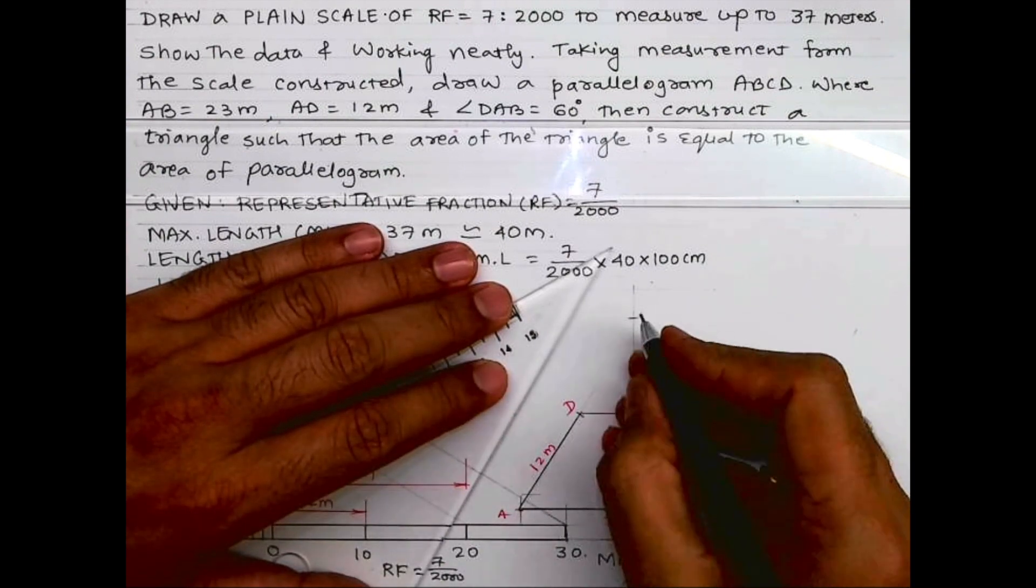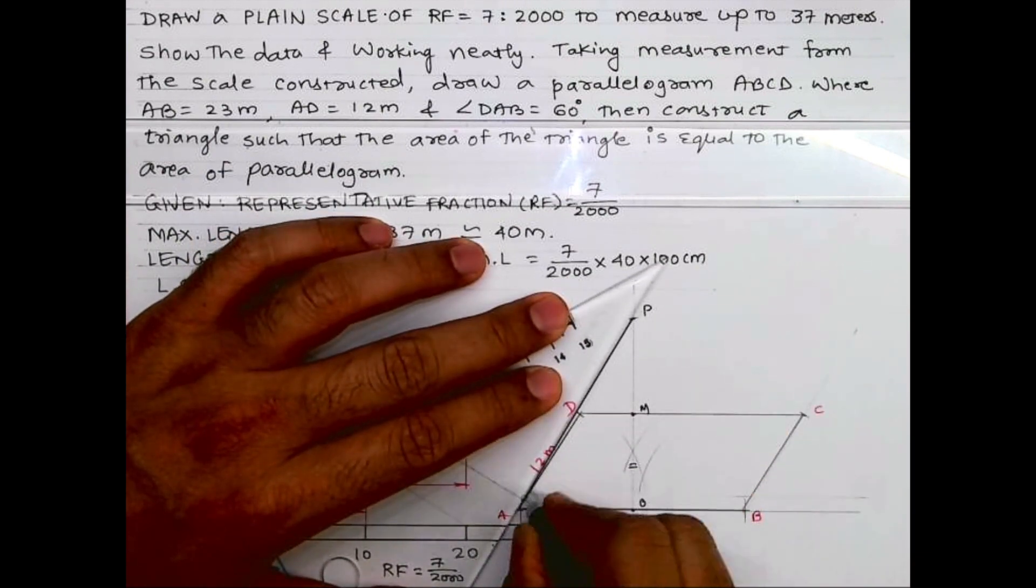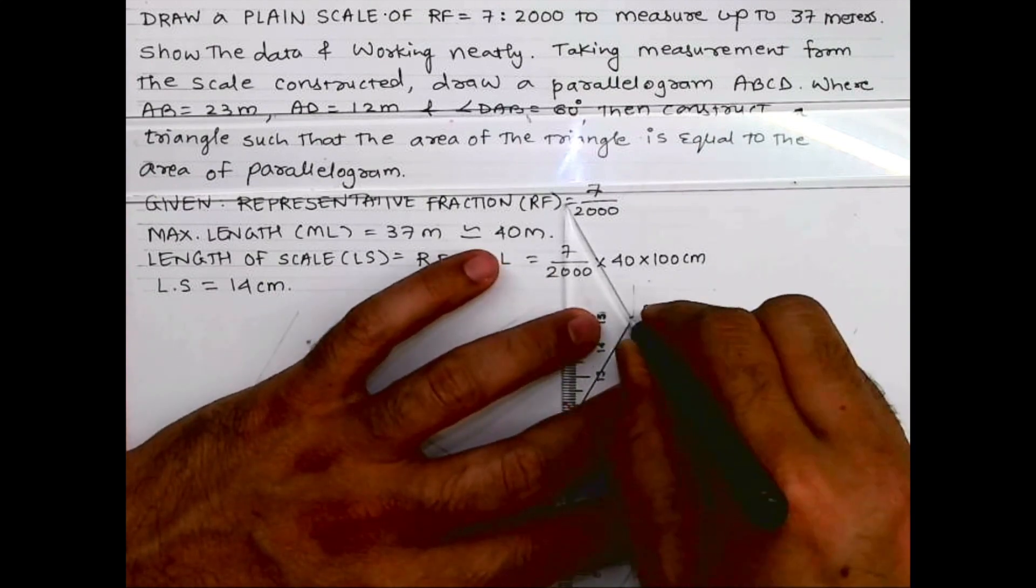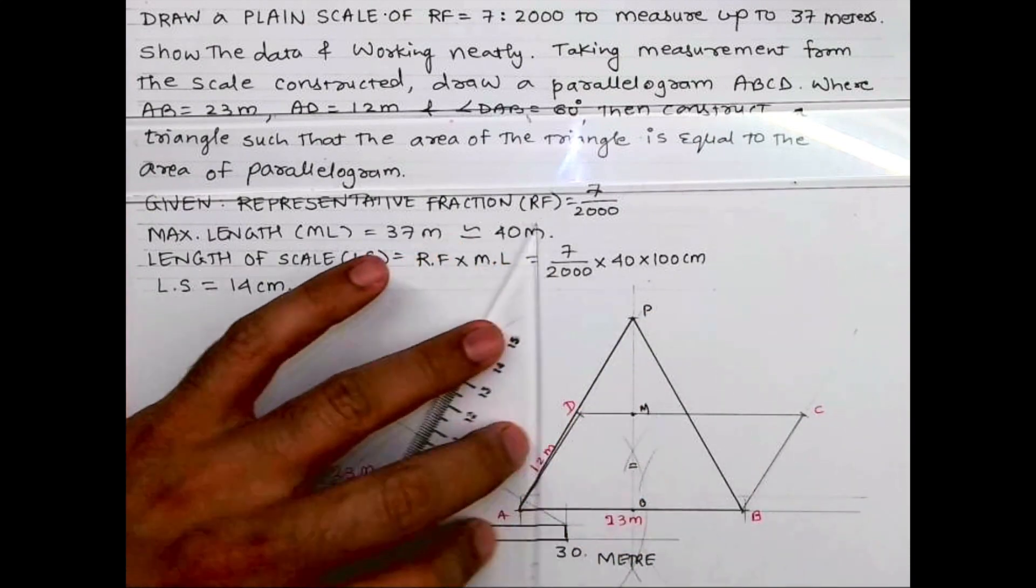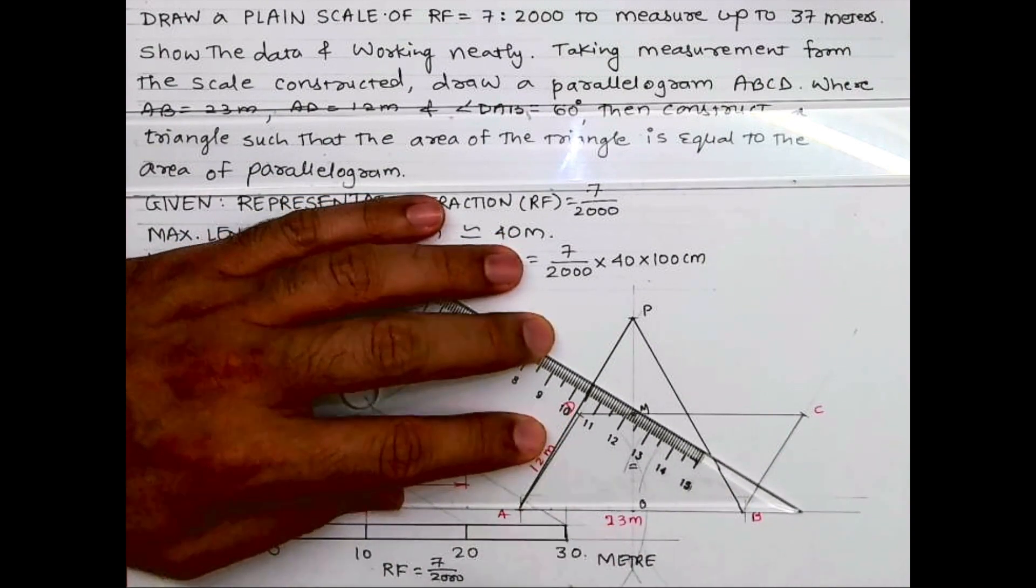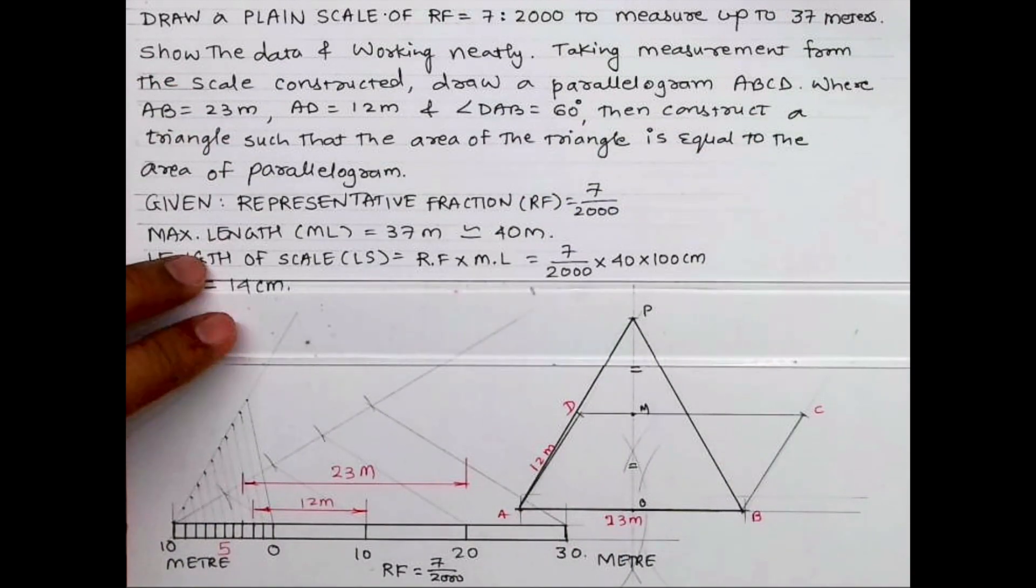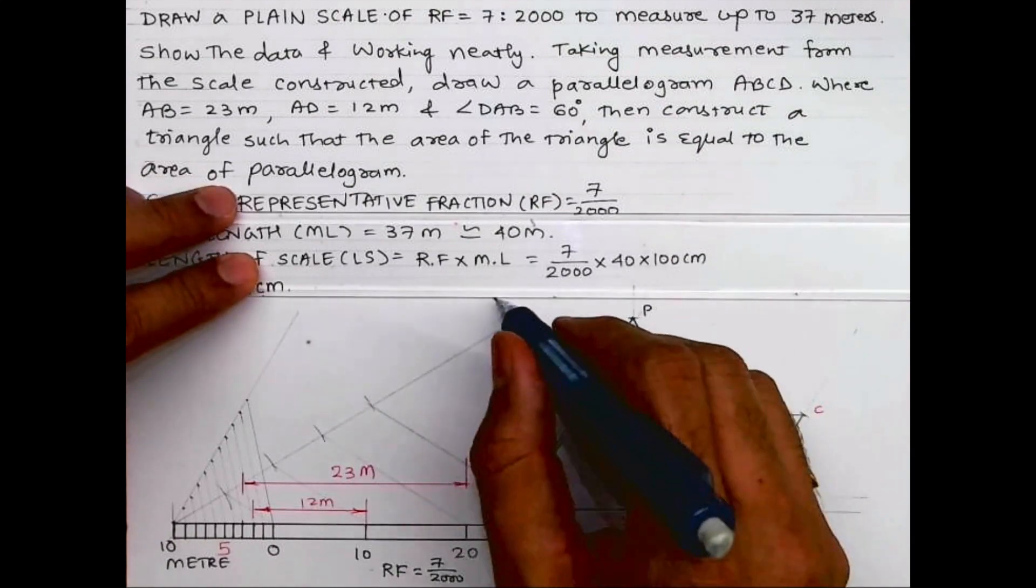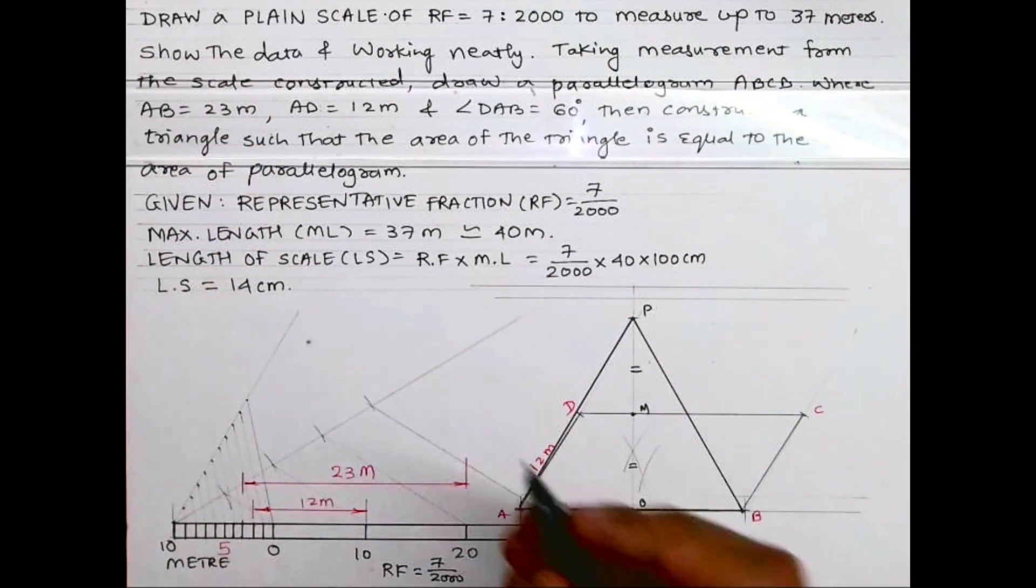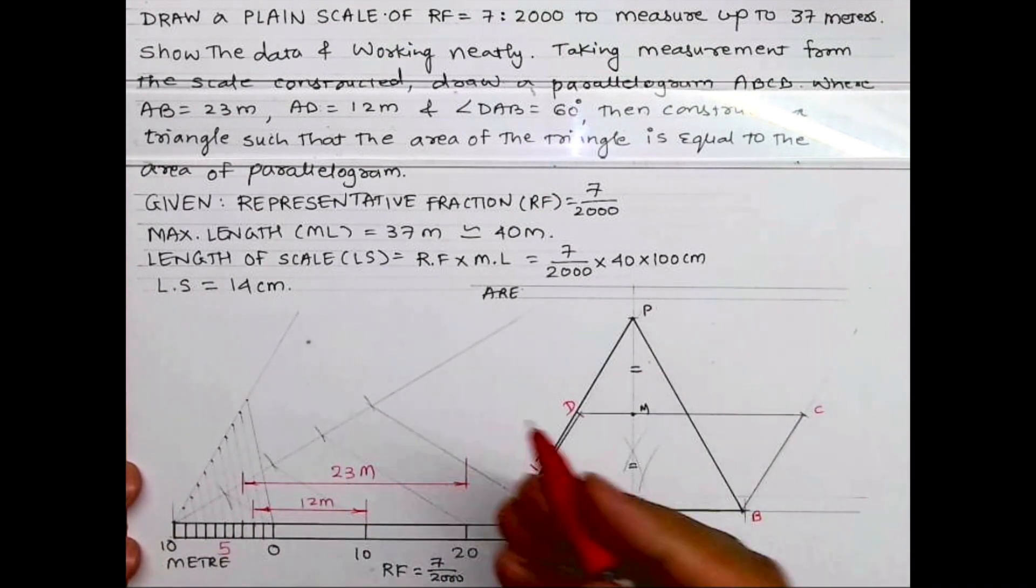Let's say this is OM is equal to MP. Then join P to A and P to B.